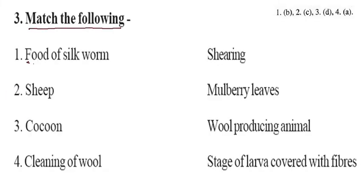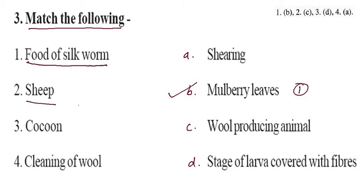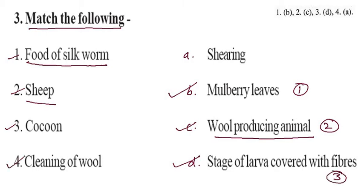Match the following. Food of silkworm is mulberry leaves. Sheep is a wool-producing animal — answer is number three. Pupa: it is the stage of larvae converted with fiber. Cleaning of wool is related to shearing. You can match the following — it is very easy.